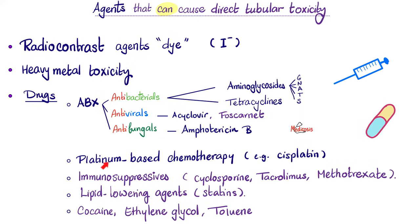Platinum — a heavy metal-based chemotherapy — and cisplatin can destroy the kidneys. Many immunosuppressive agents such as cyclosporine and tacrolimus are nephrotoxic, but not sirolimus — sirolimus spares the kidney, whereas tacrolimus is toxic to the kidney. Methotrexate is toxic to the kidney. Statins could be toxic to the kidney. And of course cocaine, ethylene glycol, and toluene.